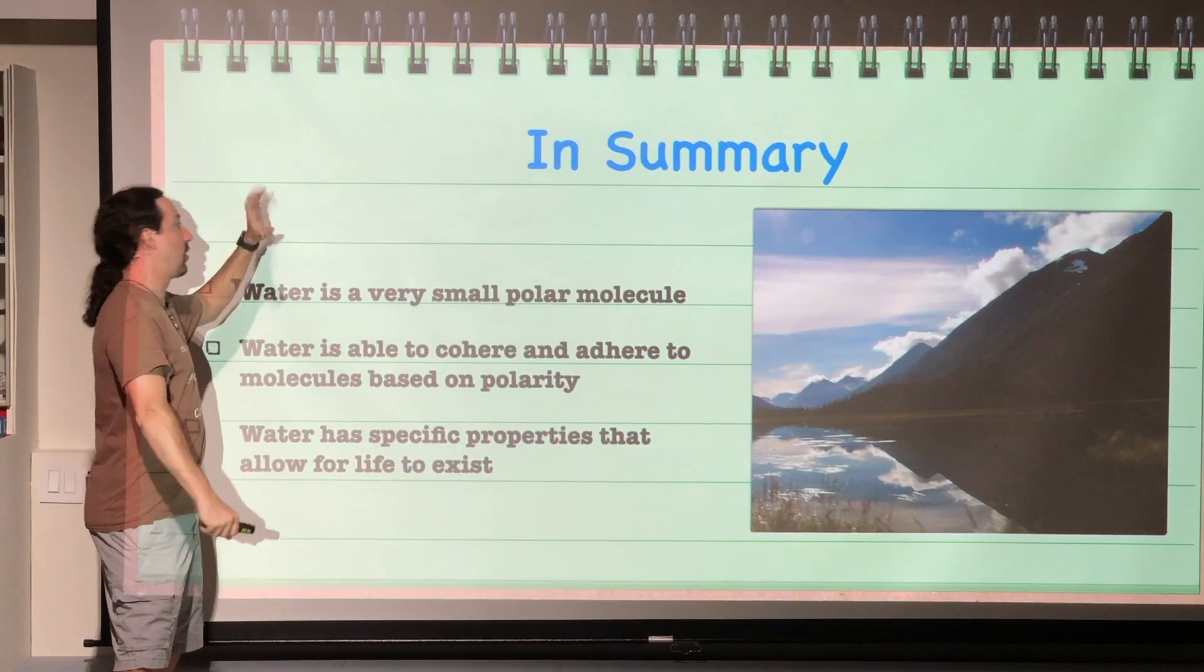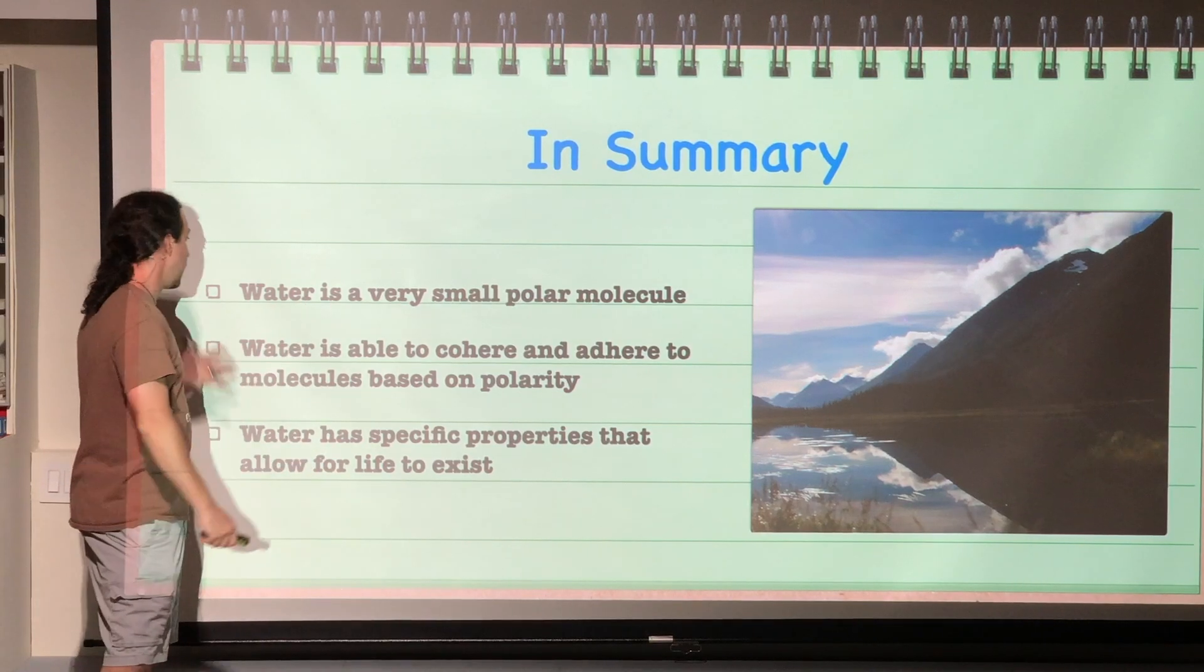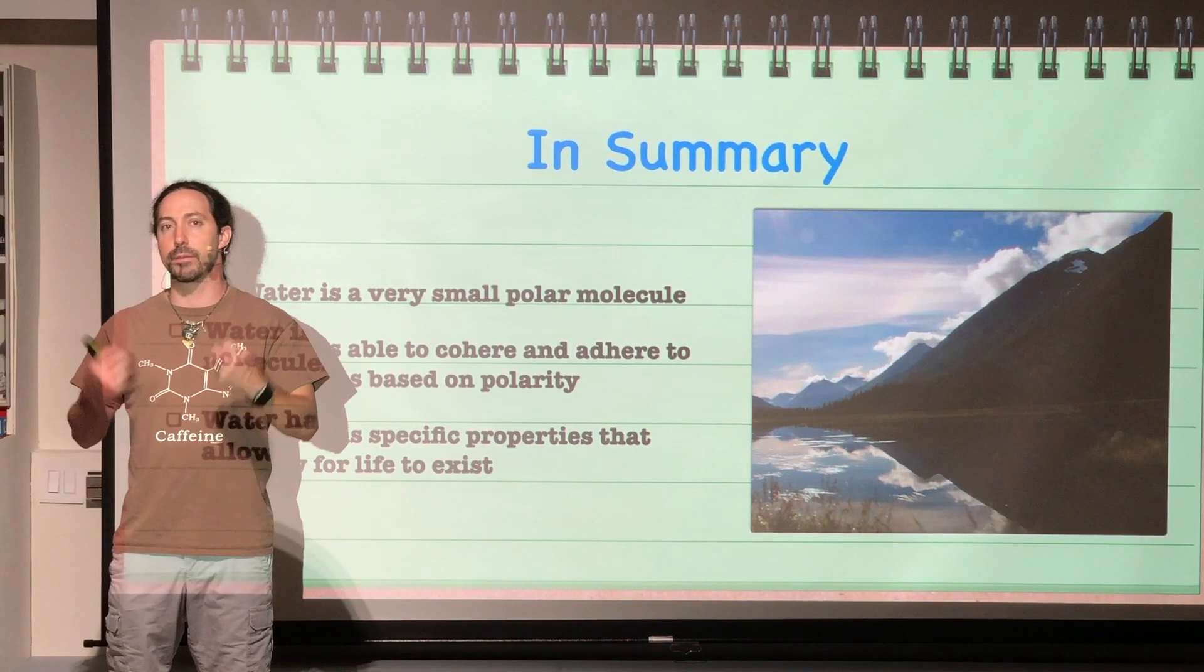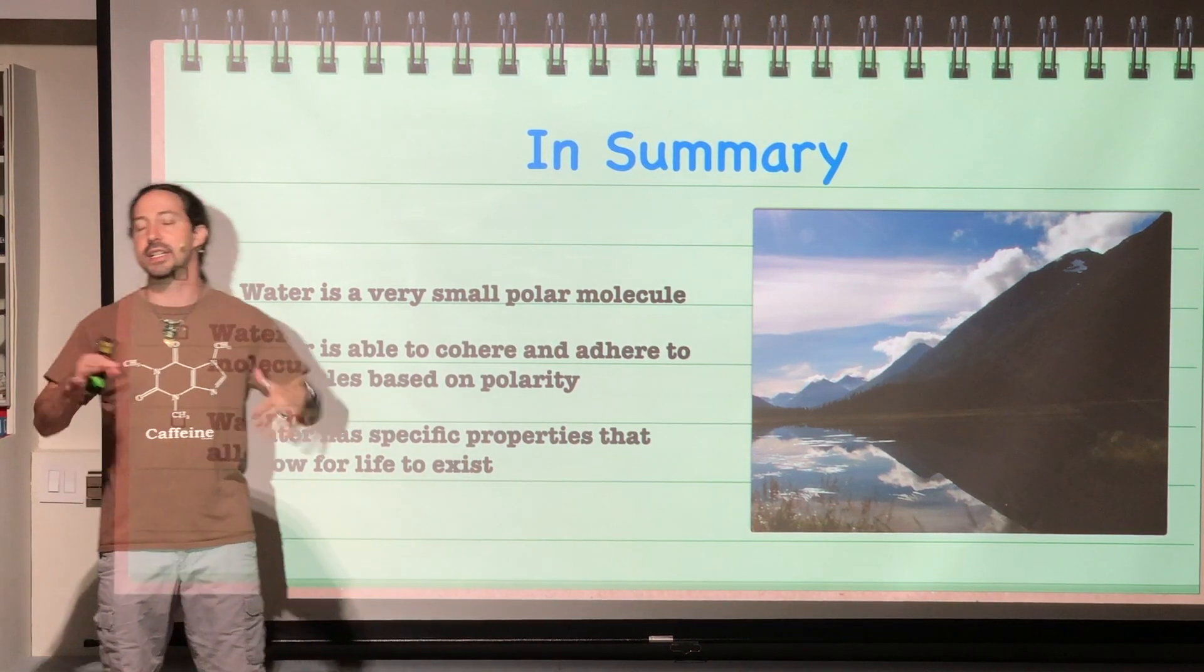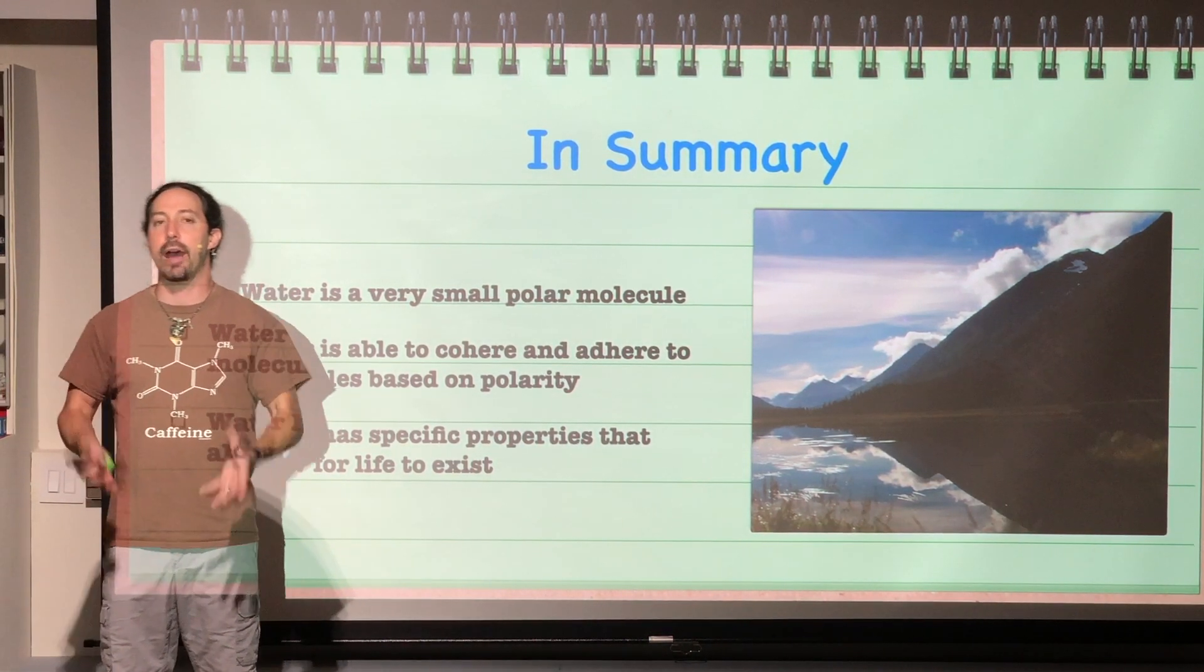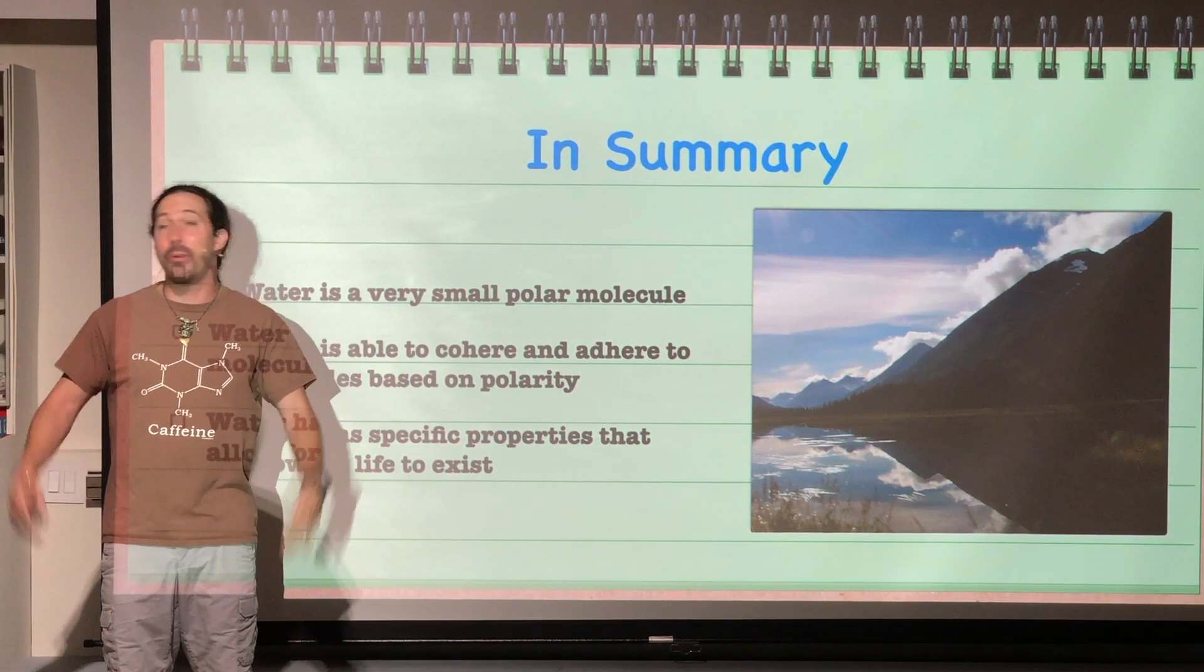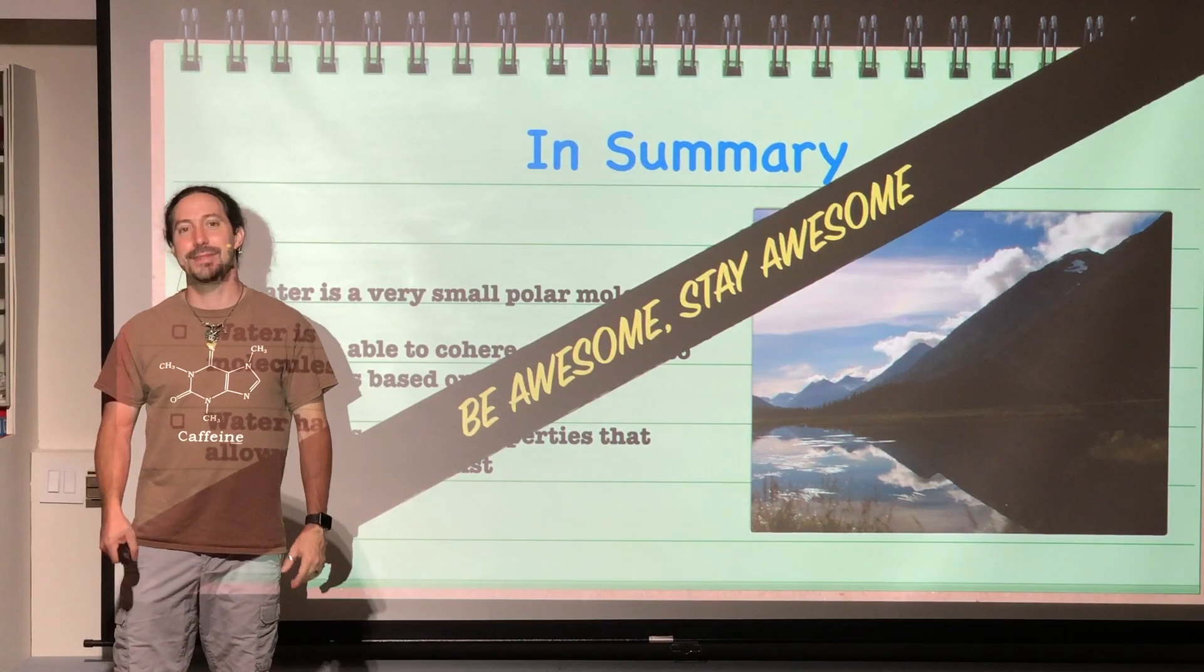For now, we're going to look at a summary. Remember, water is a very small polar molecule. It is able to cohere, attract to other like molecules. So it's able to be attracted to other water molecules and adhere to molecules based upon their polarity. It will be attracted to other polar molecules. And it has specific properties that allow for life to exist upon this planet. Without these properties in the next episode, we couldn't have life on this planet. And I don't know about you, but I think that'd really stink. So until next time, be awesome, stay awesome.